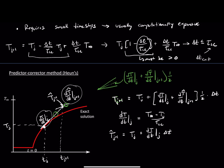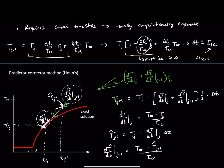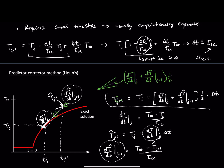We then use this to evaluate the derivative at the second time step: dt-hat/dt at j+1 is equal to (T∞ - T-hat at j+1) / τ_lc. Then we step forward using the averaging equation. So we have our estimate of the derivative at the second time step and at the first time step, and we've used the first time step to predict the temperature that lets us plug in for the second evaluation. This entire process is just a sequence of evaluating a couple of derivatives that we use to estimate the real derivative — these are always approximations — to take a step forward in an accurate way.